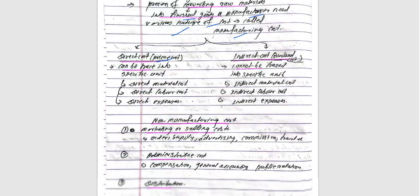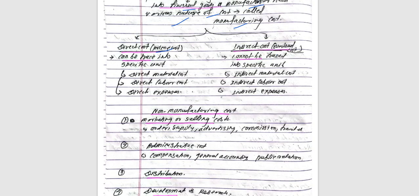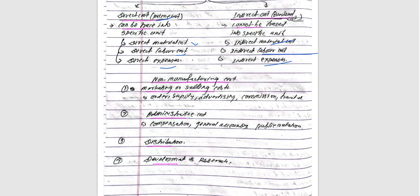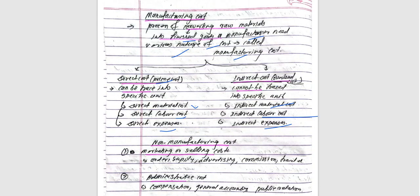Prime cost can be traced to a specific unit. It includes direct material cost, direct labor cost, and direct expenses. Overhead cost includes indirect material cost, indirect labor cost, and indirect expenses. Then there is non-manufacturing cost.